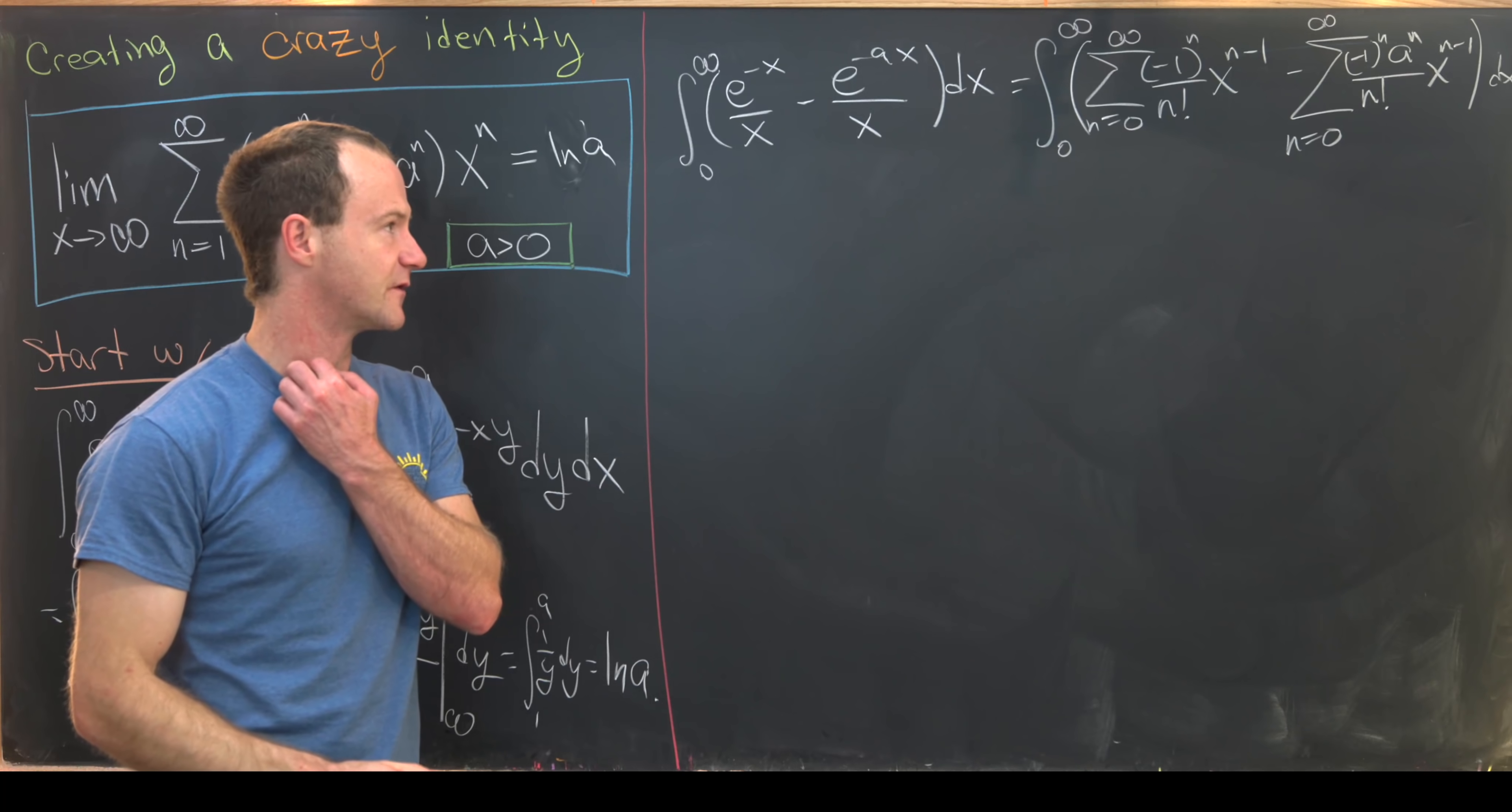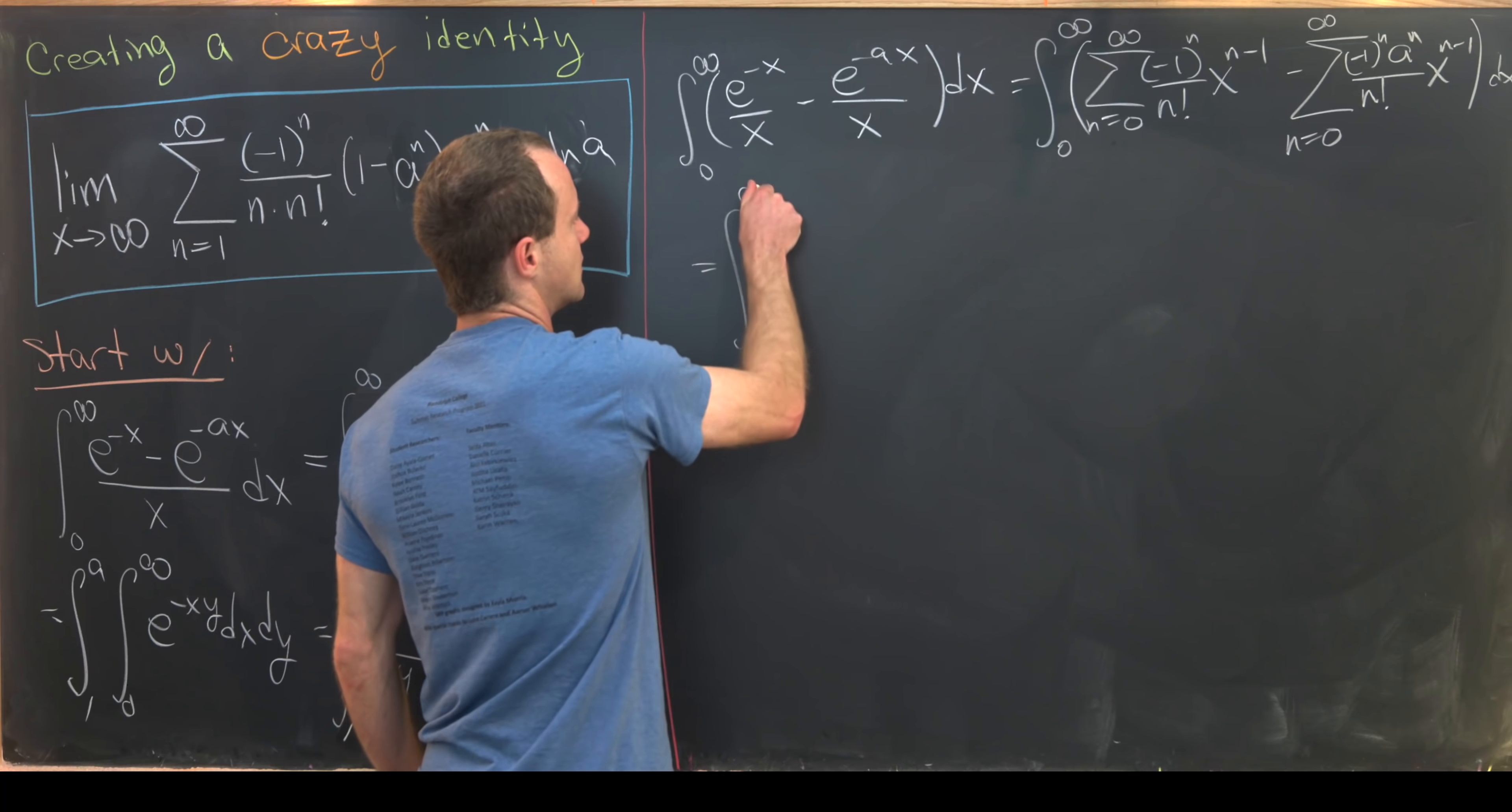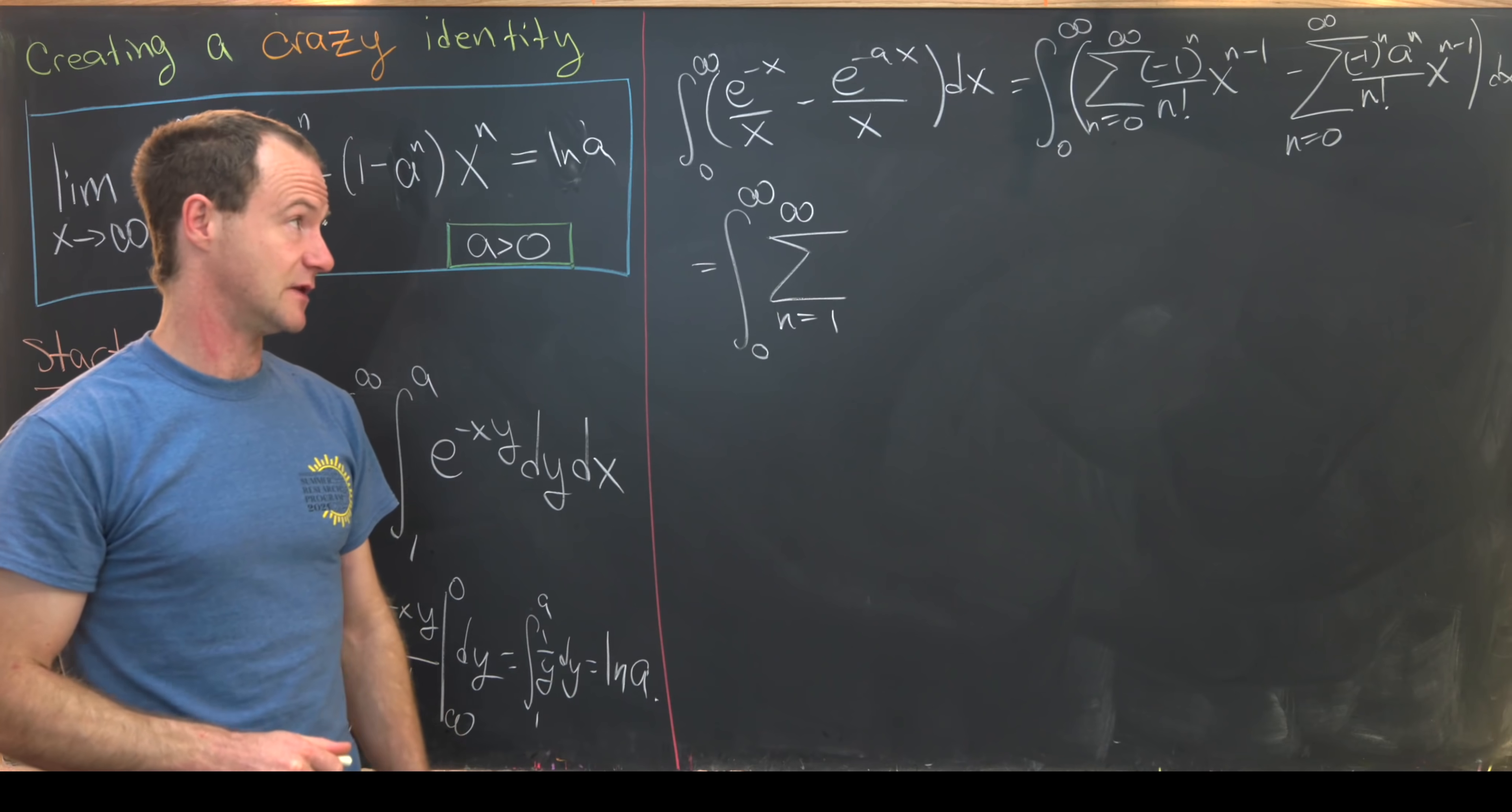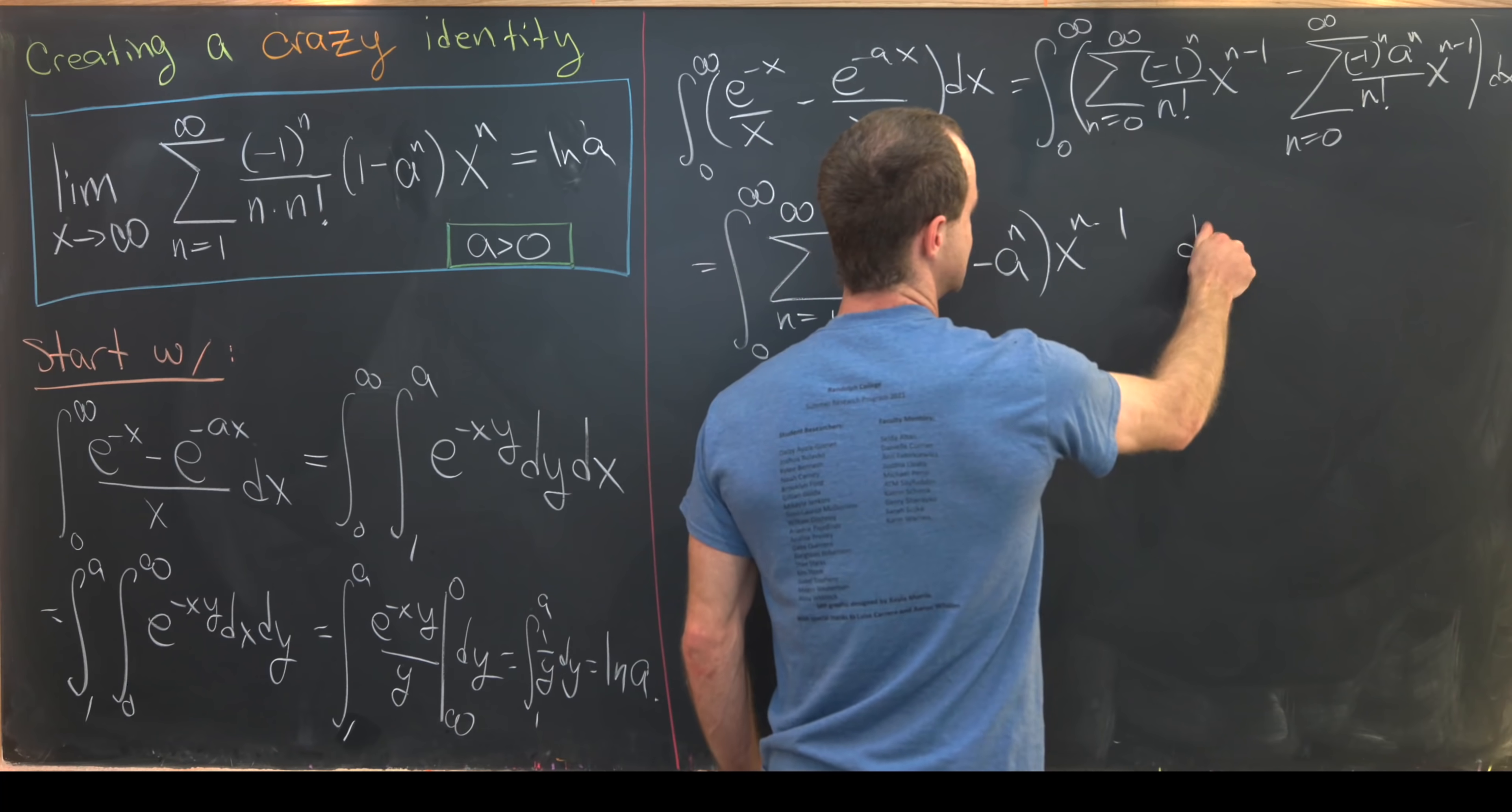Now where can we go from there? Let's notice that the n equals 0 term for both of these is exactly the same and that's nice because that means our 1 over x term cancels. So we'll be left with the integral from 0 to infinity of the sum as n goes from 1 up to infinity. Now we'll put those together. Keeping in mind that the n equals 0 term just cancelled, we have minus 1 to the n over n factorial and then we'll have 1 minus a to the n x to the n minus 1 dx.